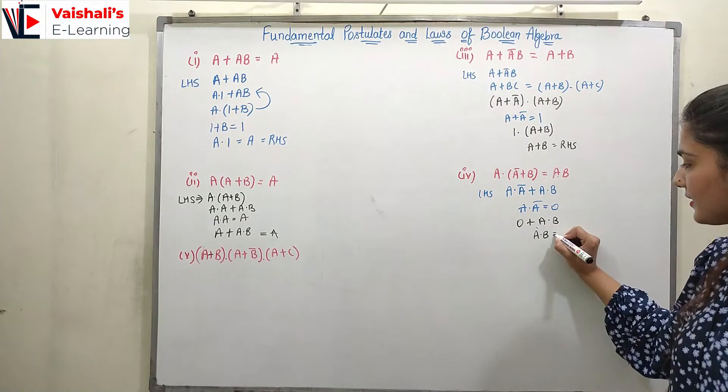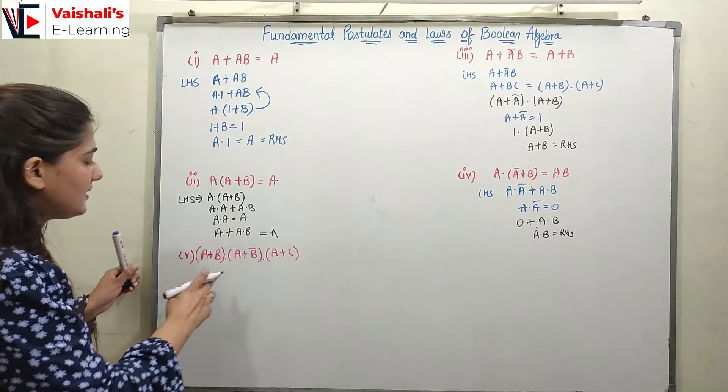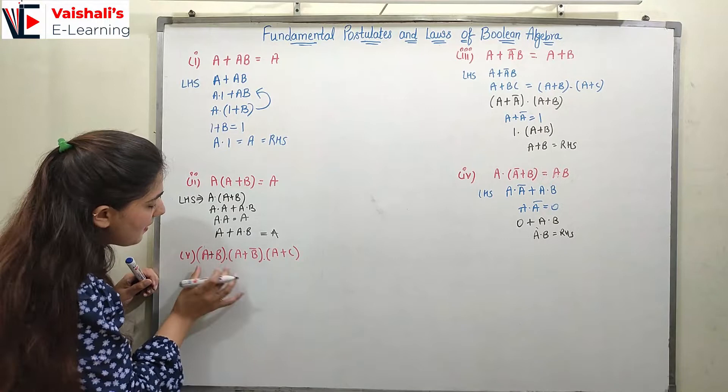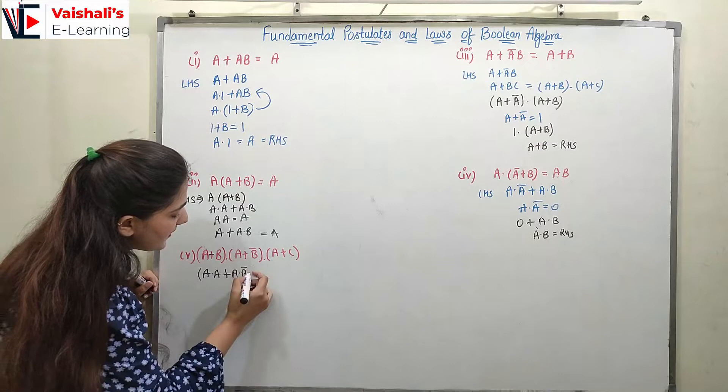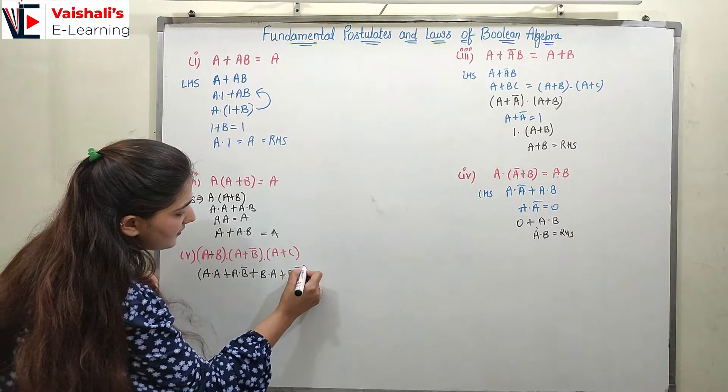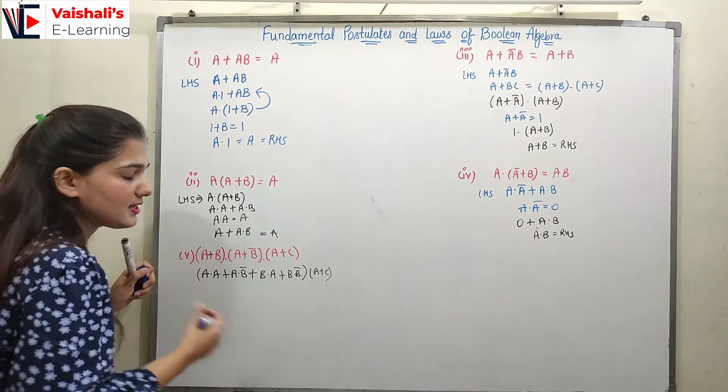Coming to the next problem: (a + b)·(a + b̄)·(a + c). We will expand it first, opening two brackets. Multiplying out (a + b)·(a + b̄): we get a·a + a·b̄ + b·a + b·b̄. By commutative property, b·a = a·b. And b·b̄ = 0. So we have a + a·b̄ + a·b, multiplied with (a + c). I will show all the steps.